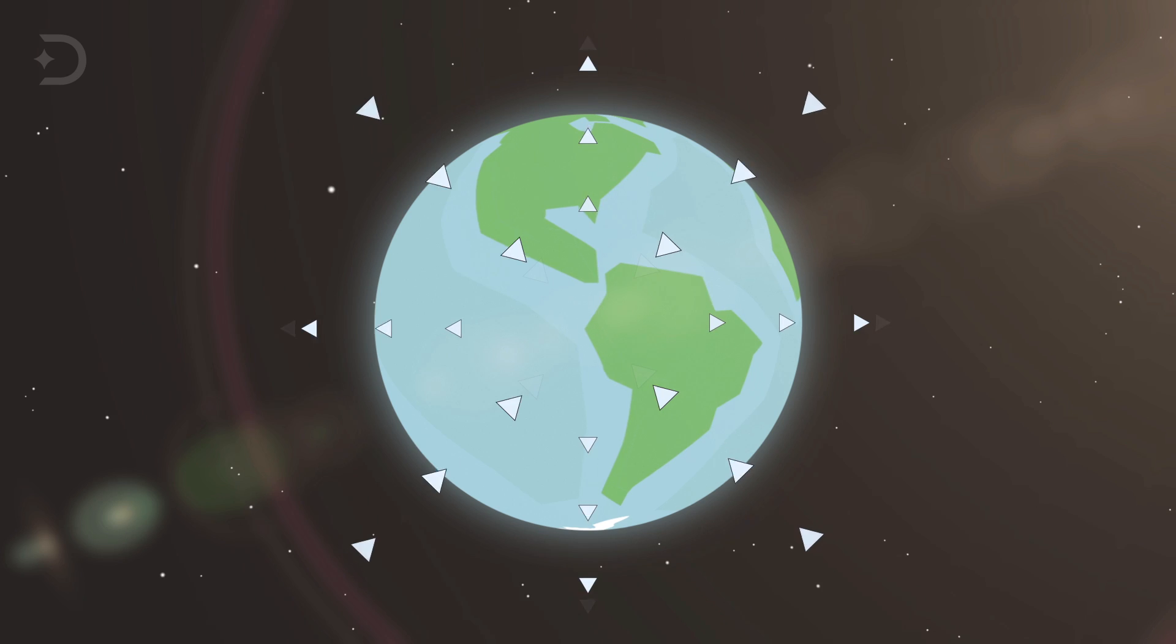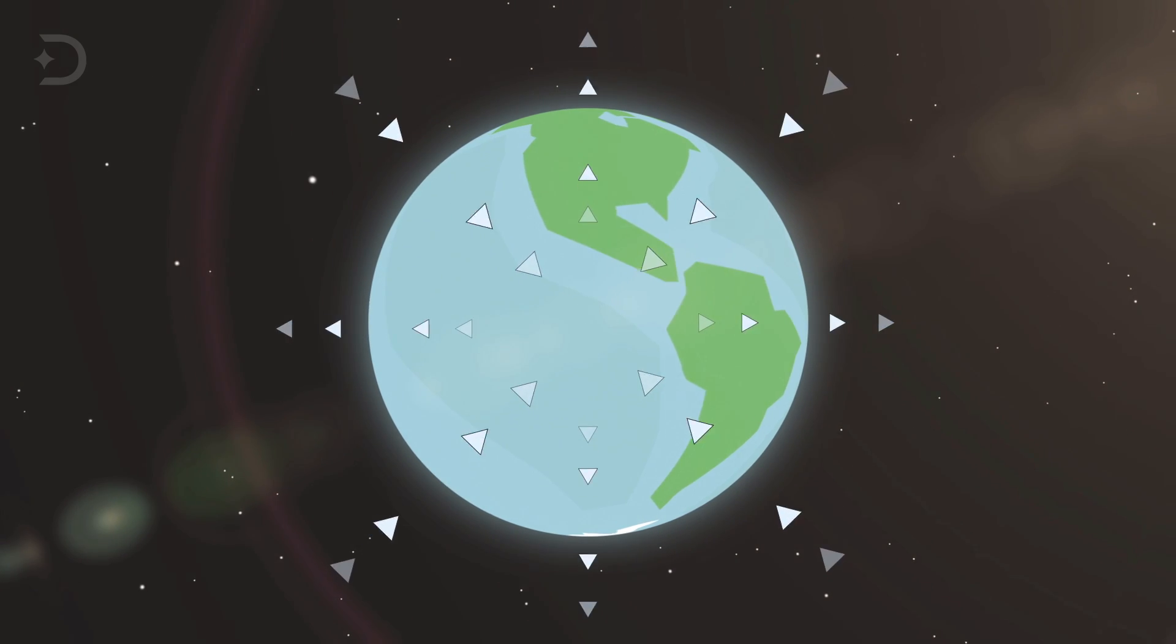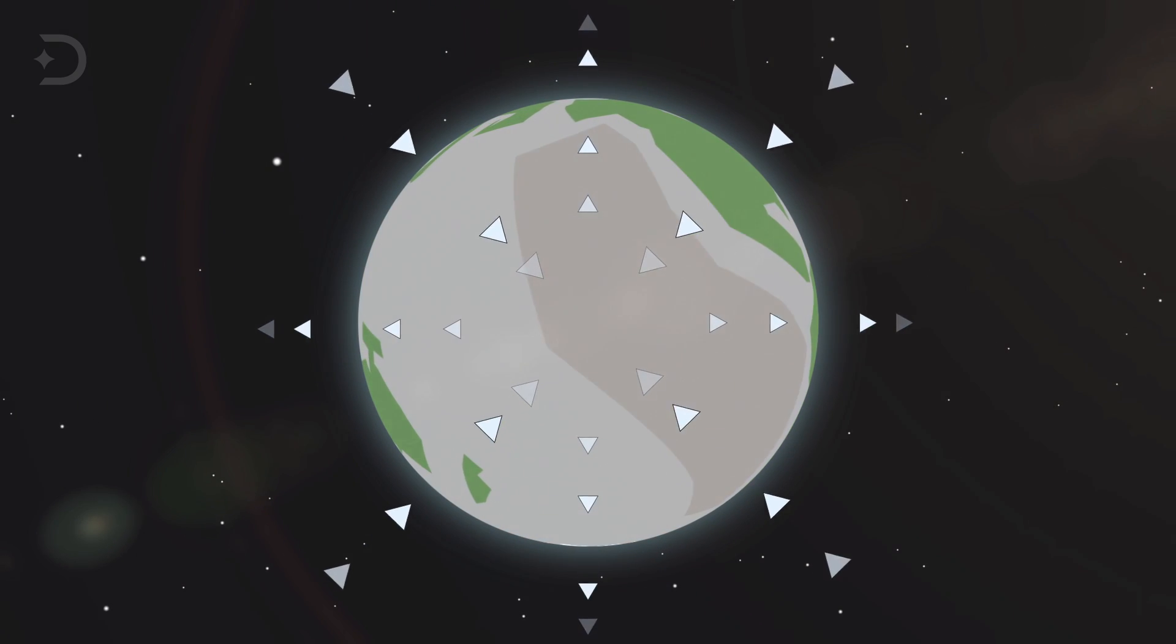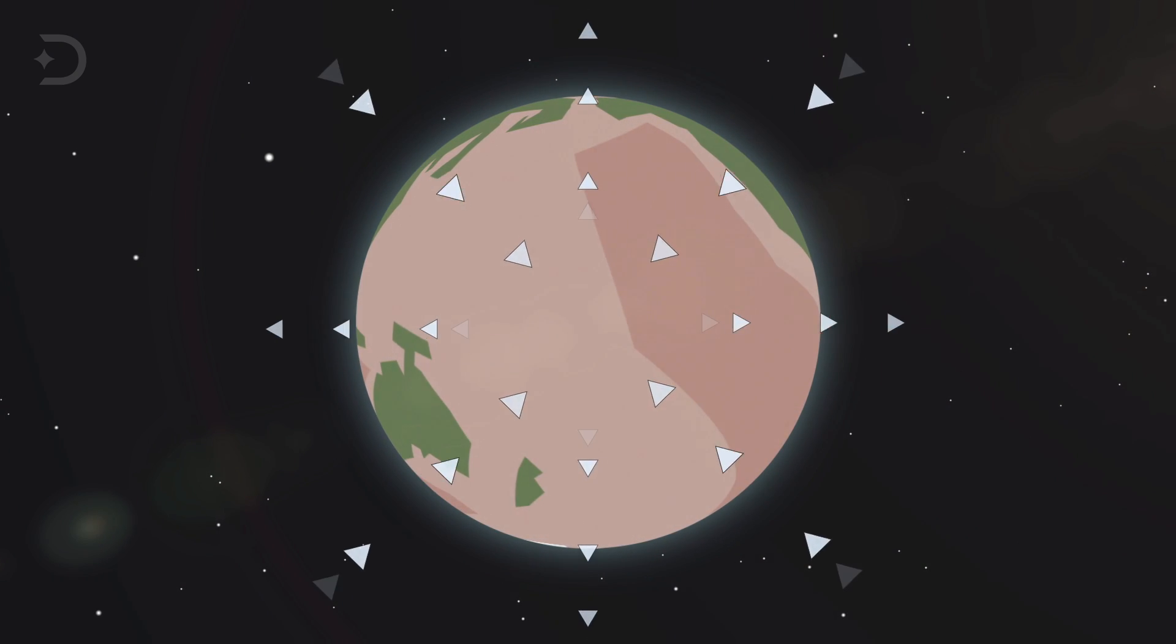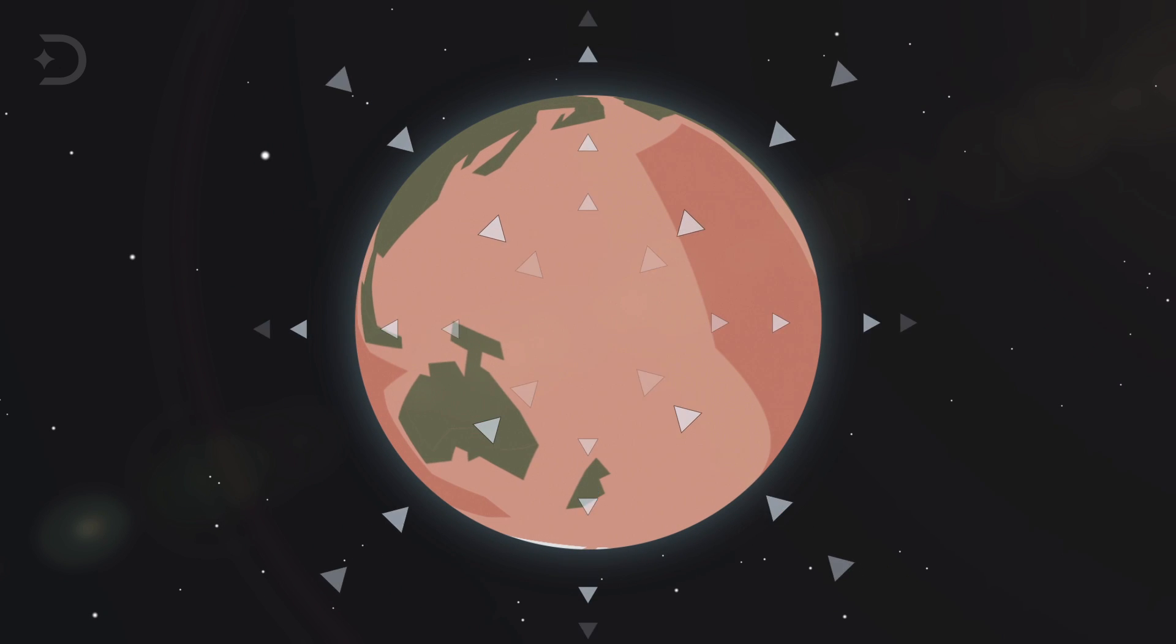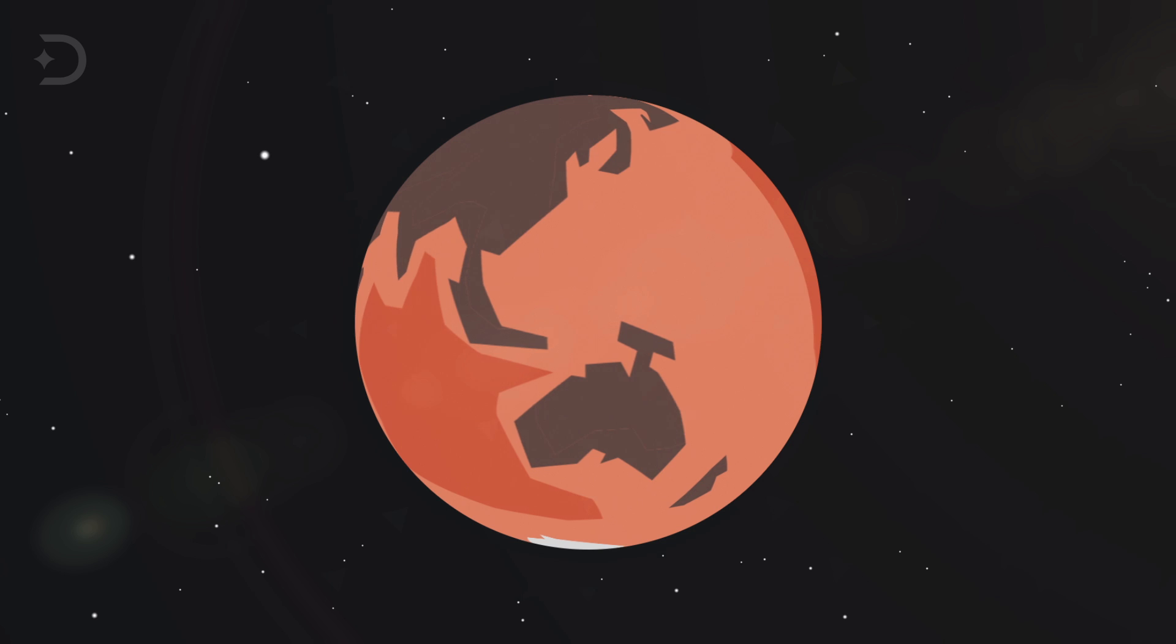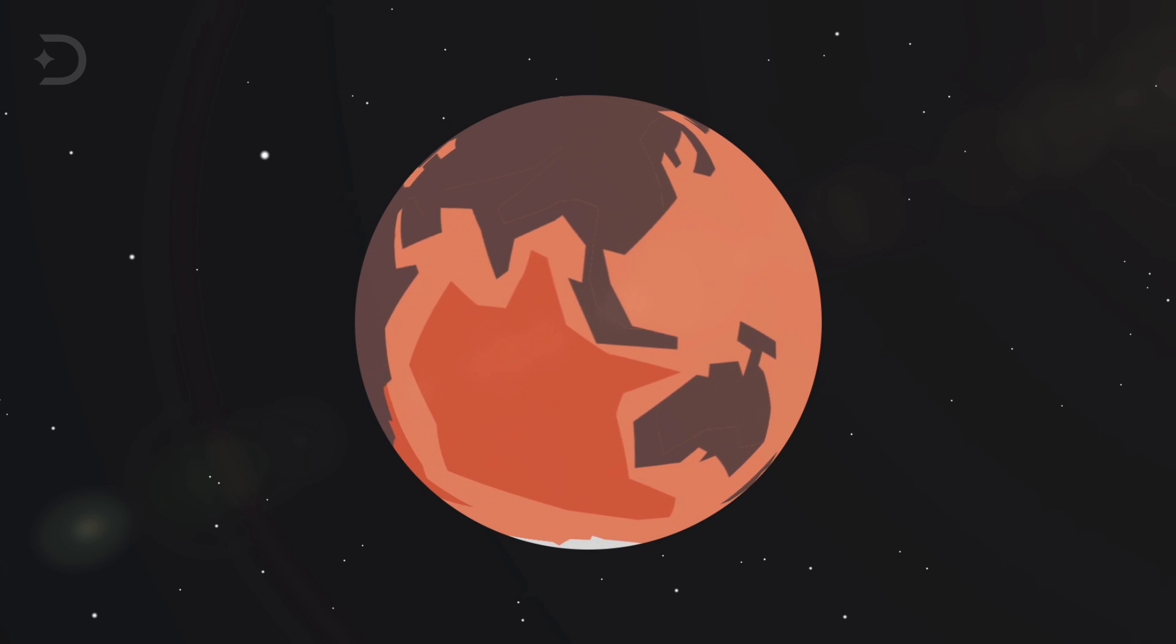The phenomenon has major implications for the global water cycle. The stark reality of the findings is that because of the big inconsistency in how much water is being absorbed and how much the planet is expelling, means that in time, the amount of water inside the Earth will continue to increase, and the water on the surface would decrease. And our planet could end up looking a lot like Mars.